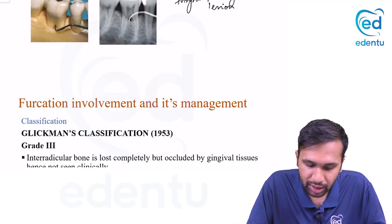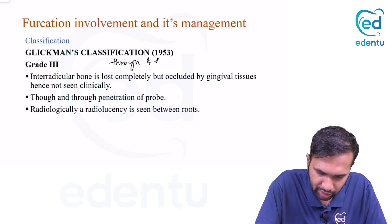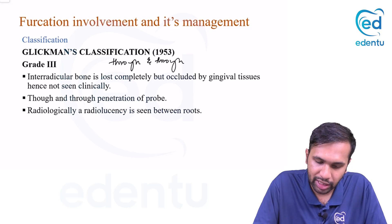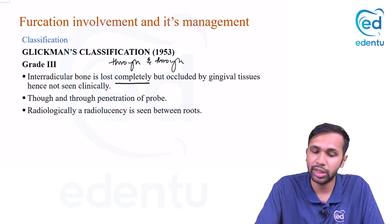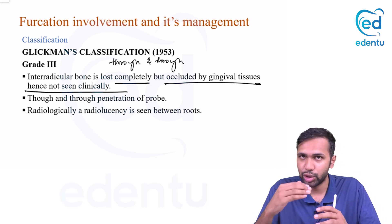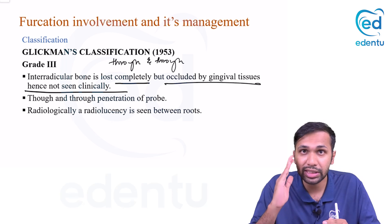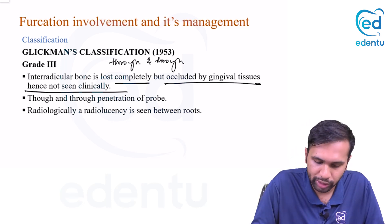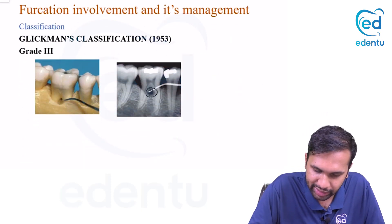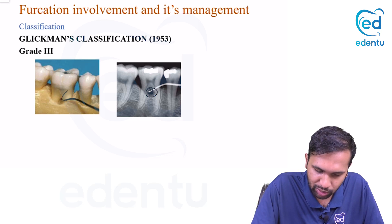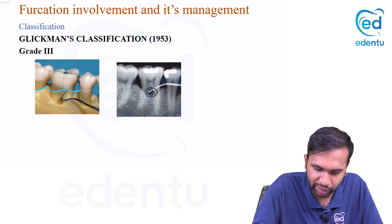Grade three is a through-and-through lesion — the probe goes through and through the furcation — but the furcation is still covered by gingival tissue, so you cannot see it clinically. Interradicular bone is lost completely. Through-and-through penetration of the probe is seen, and radiographically a radiolucency is visible in the furcation area.